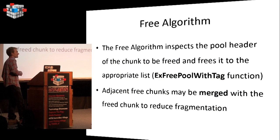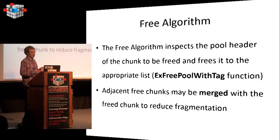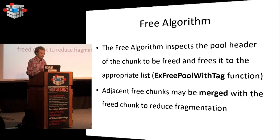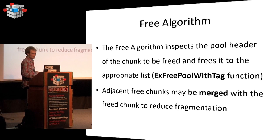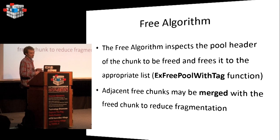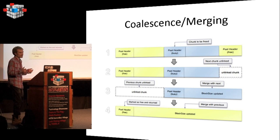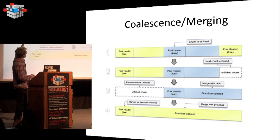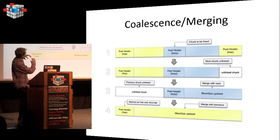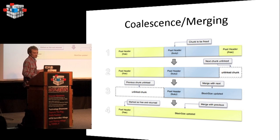When you free memory, there are also many functions, but in the end they all call ExFreePoolWithTag. It returns the chunk header to the appropriate list. One key point is that if adjacent blocks are also free, the allocator merges them — also called coalescence — to reduce fragmentation. For example, if there is a free chunk, then a busy chunk, then another free chunk, when you free the busy chunk, the allocator merges all adjacent free blocks into one big free chunk.